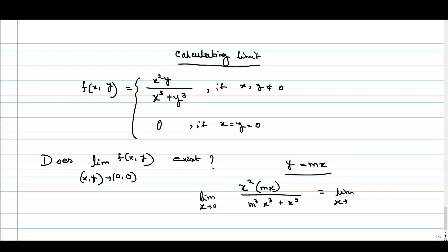So the limit as x tends to 0 is m/(m³+1). Now this term is independent of x, so the limit is m/(m³+1).